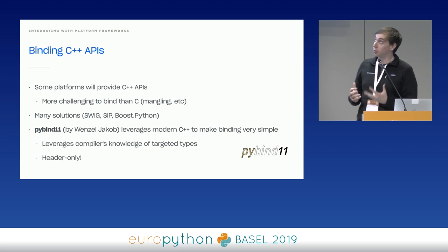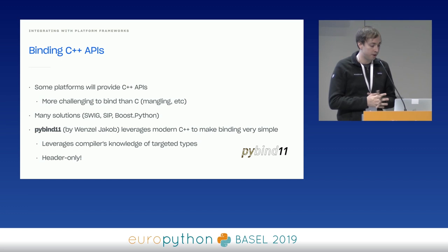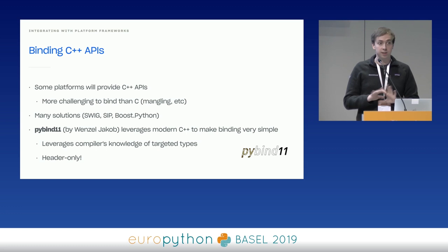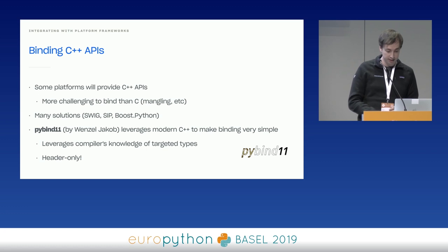There are solutions for C++ — things like SWIG, SIP, Boost.Python — but these tend to be really bulky. Our favorite so far is PyBind11 by Wenzel Jakob, who I think works at EPFL. This library is incredible — it uses C++11/14/17 features, it's header-only, and it generates a Python extension for you using the types that you're actually linking against. It's been really fantastic and helpful for us.